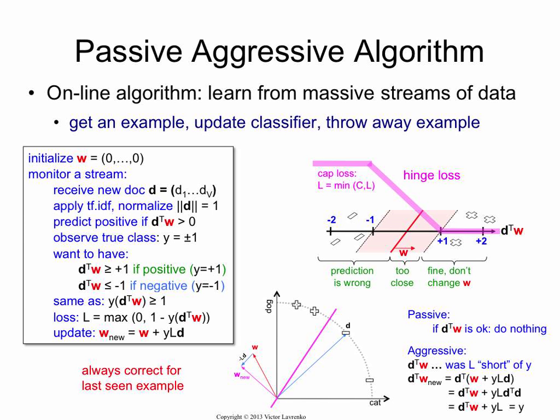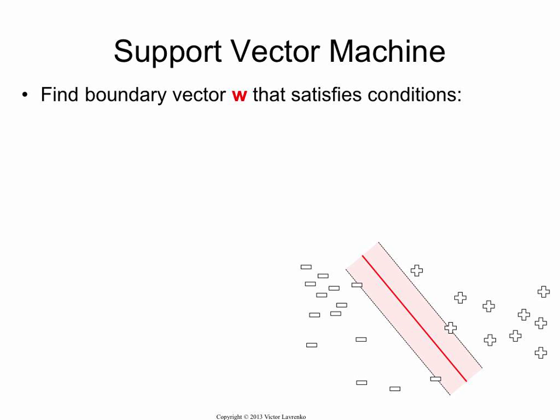particularly when the data is not nicely separable. So in practice, what you often do is you cap the loss function. So you introduce a constant C, and here when you're computing the loss function, if L was bigger than C, then you just cap it at C. So that's what your new loss function is going to look like.